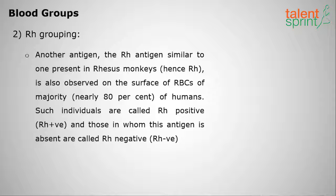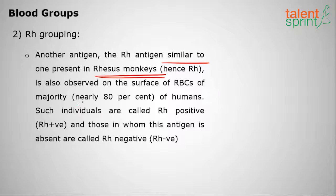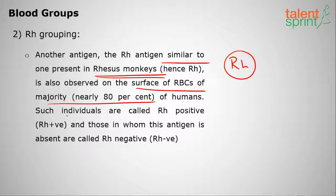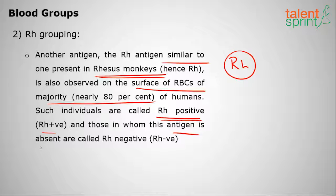The next type is Rh grouping. The Rh antigen is similar to one present in rhesus monkeys, hence the name Rh. It is observed on the surface of RBCs in about 80% of humans. Such individuals are called Rh positive, and those in whom this antigen is absent are called Rh negative, which is a very rare blood type.